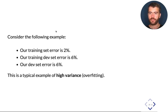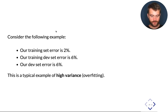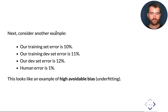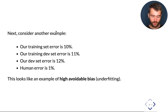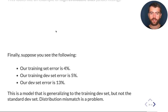Our model fits the training set perfectly, but even the training-dev set — which we know comes from the same distribution since it's just a random subset of the training set — has worse error, indicating the model overfits the training set. If we have a training error of 10%, training-dev error of 11%, dev set error of 12%, but human error is only 1%, this is clearly an example of high avoidable bias.